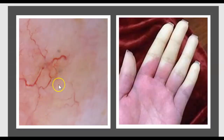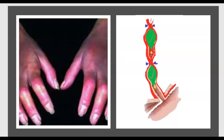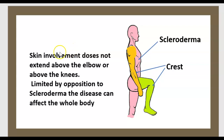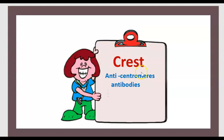Here are pictures of telangiectasia, Raynaud phenomenon, sclerodactyly, and esophageal dysmotility. Calcinosis is the accumulation of calcium in the skin. In CREST syndrome, skin involvement does not extend above the elbow or above the knee. To make the diagnosis of CREST syndrome: clinical picture plus anti-centromere antibody.